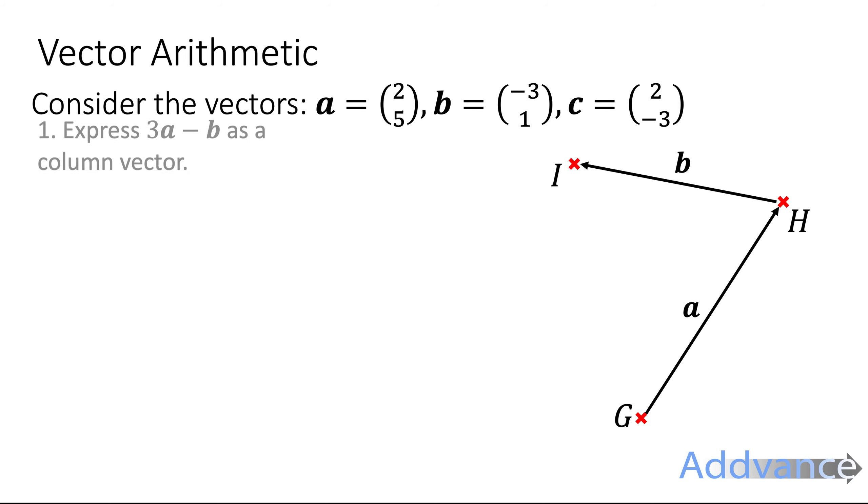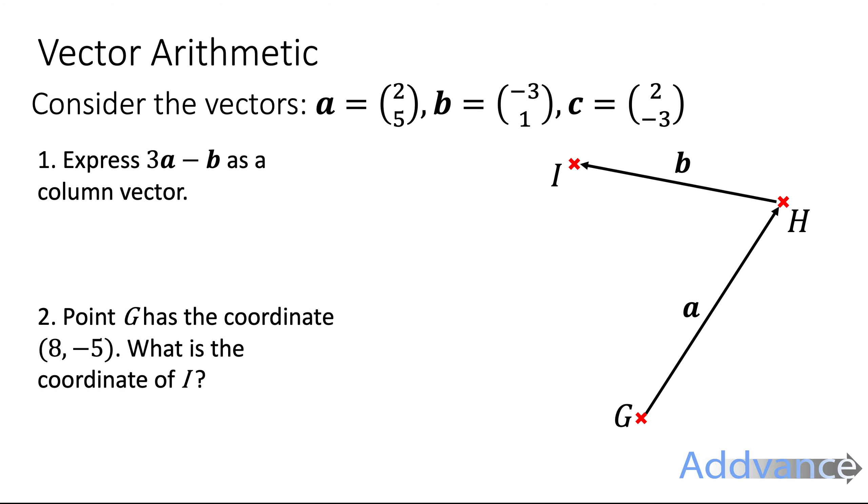Let's look at an example of vector arithmetic. So first we look at the vectors a which is (2,5), b (-3,1) and c (2,-3). We're going to express the vector 3a minus b as a column vector. So 3a minus b and we substitute in a, we substitute in b like this. Three times (2,5) is (6,15) and now we subtract them.